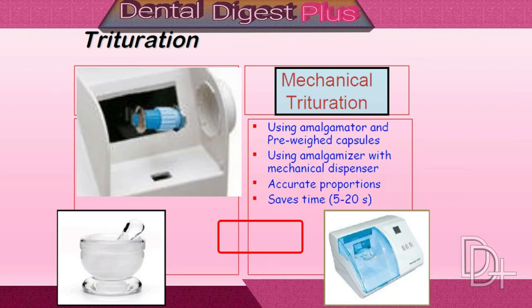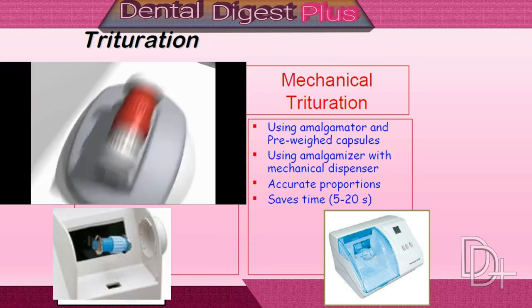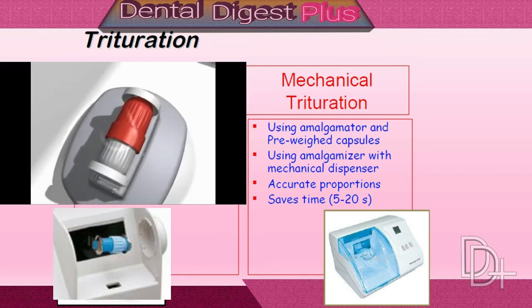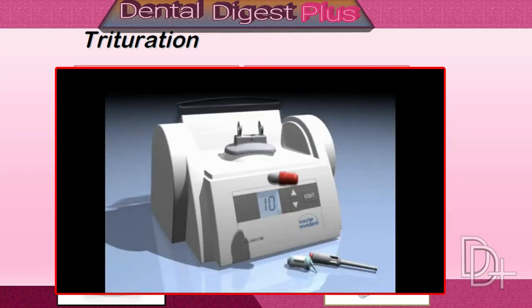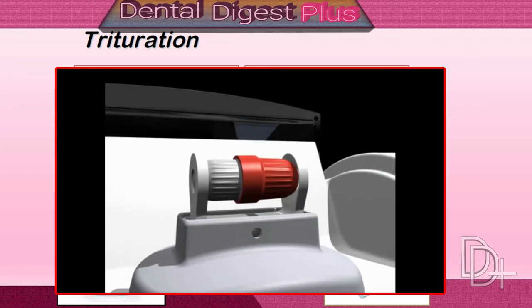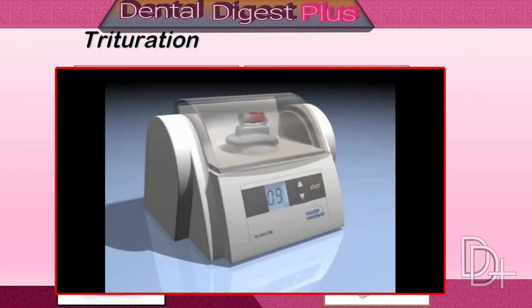The mixing arm carrying a capsule can move back and forth in a straight line, or back and forth in a figure of eight, or in centrifugal movements. When the capsule has been secured in the machine and it is turned on, the arms holding the capsule oscillate at high speed — this is how trituration is accomplished.